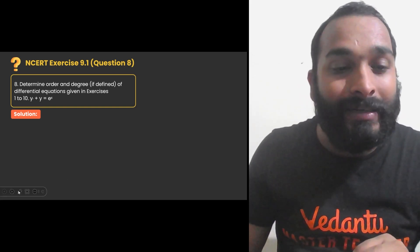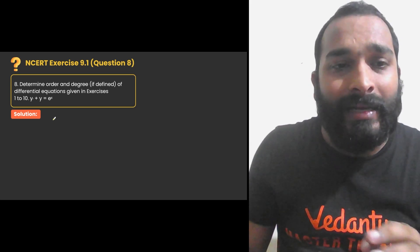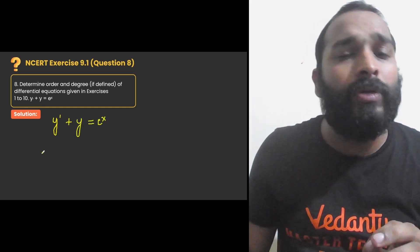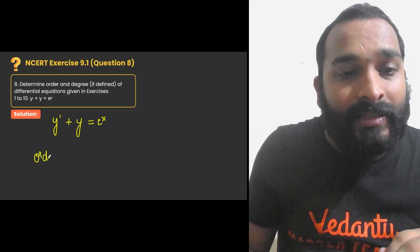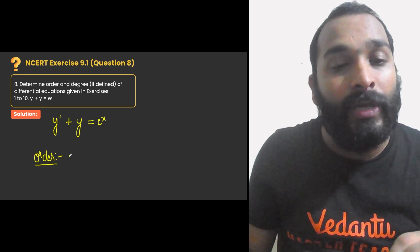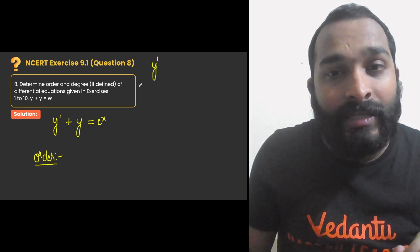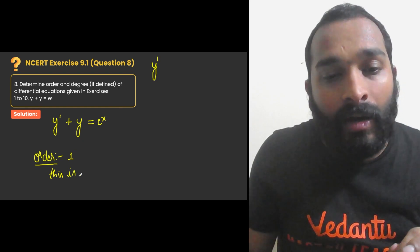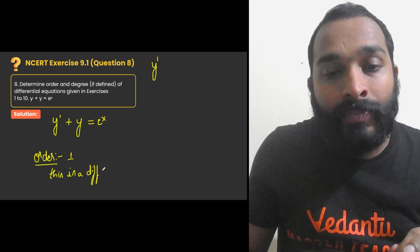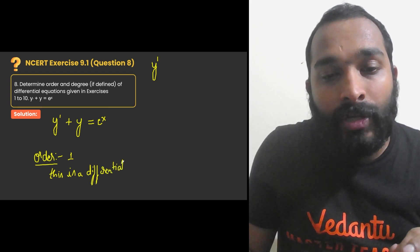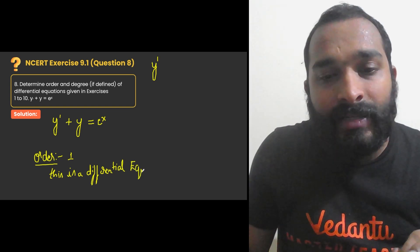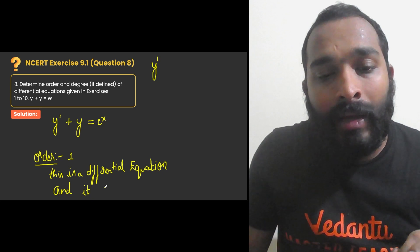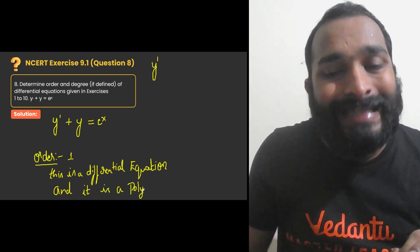In the last several questions, you have already learned how to find the degree and order. Now they are telling us to find the degree and order of the differential equation y dash plus y equal to e to the power x. Order is the highest derivative. The highest derivative in this differential equation is y dash. So order is 1.